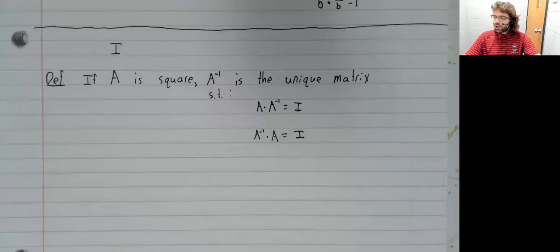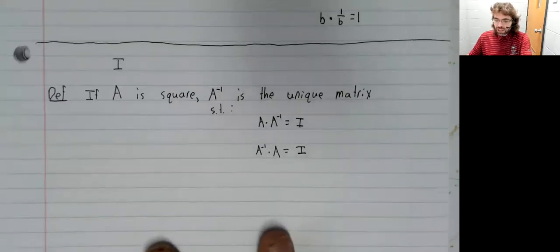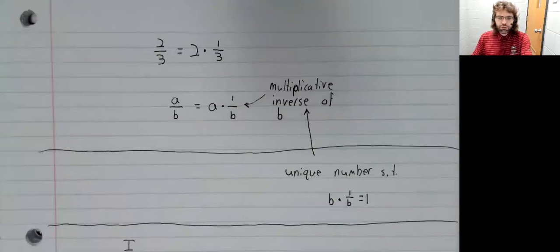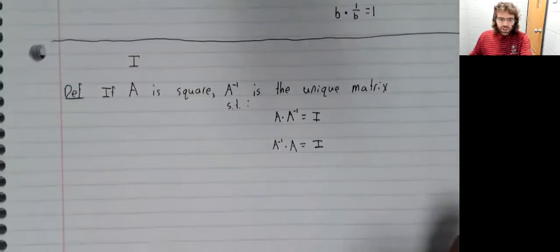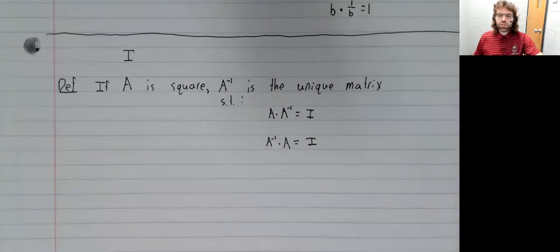Now, not every square matrix has an inverse. In a sense, that's not surprising. Not every real number has a multiplicative inverse. The real number zero doesn't. With matrices, it's not just the zero matrix, though. There are a lot of matrices that don't have multiplicative inverses.